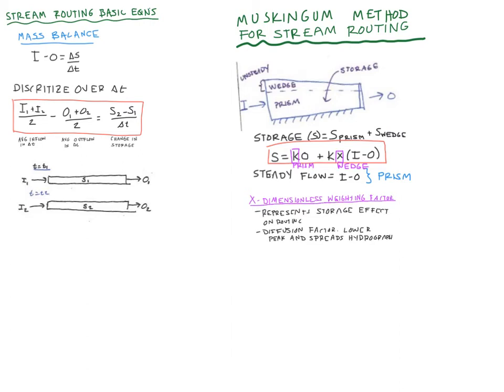This term is dimensionless and ranges between 0 and 0.5. If you have a value of about 0.01 to 0.3, that would represent a natural stream.